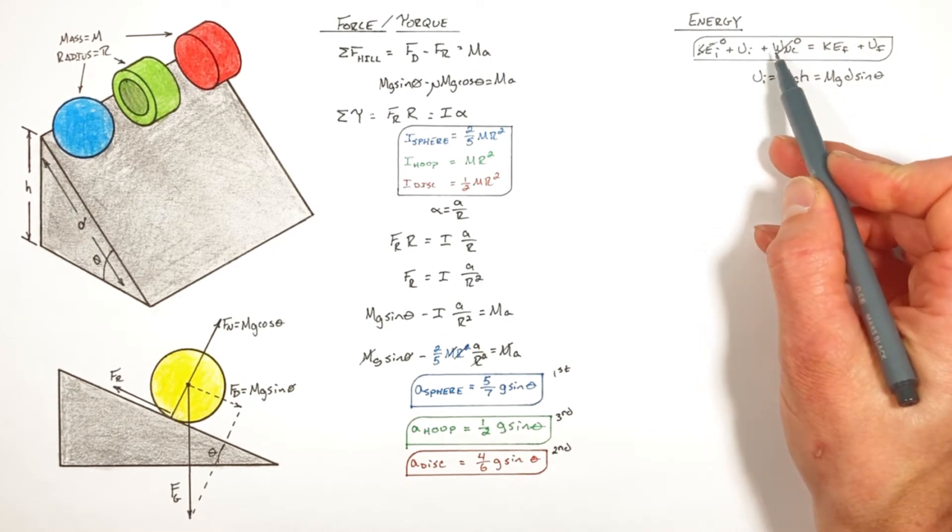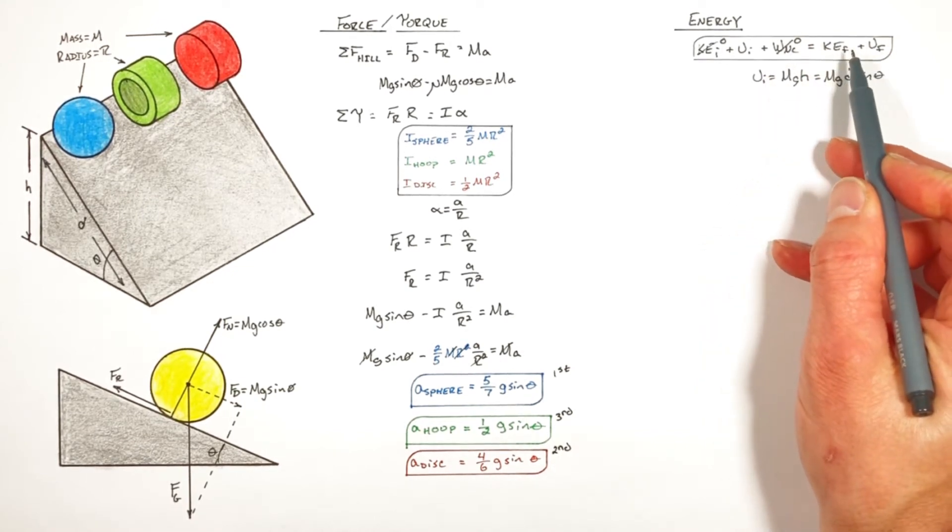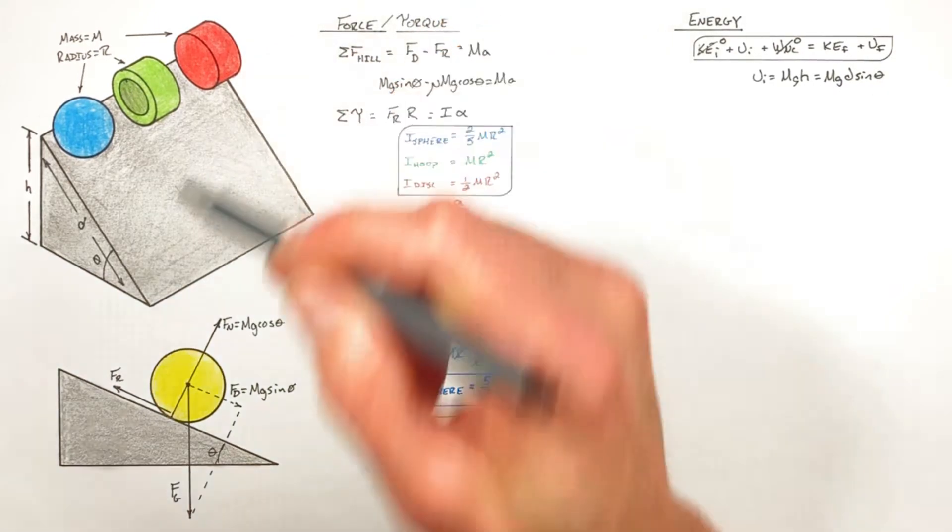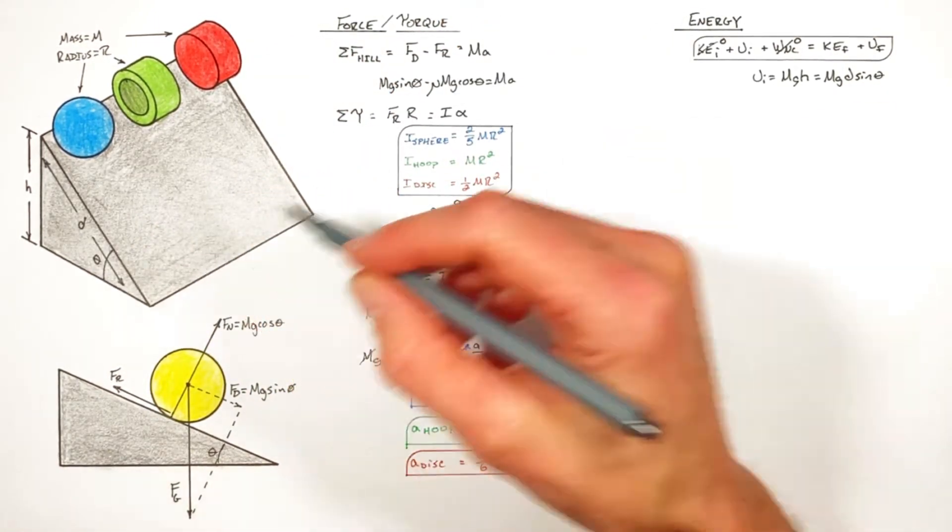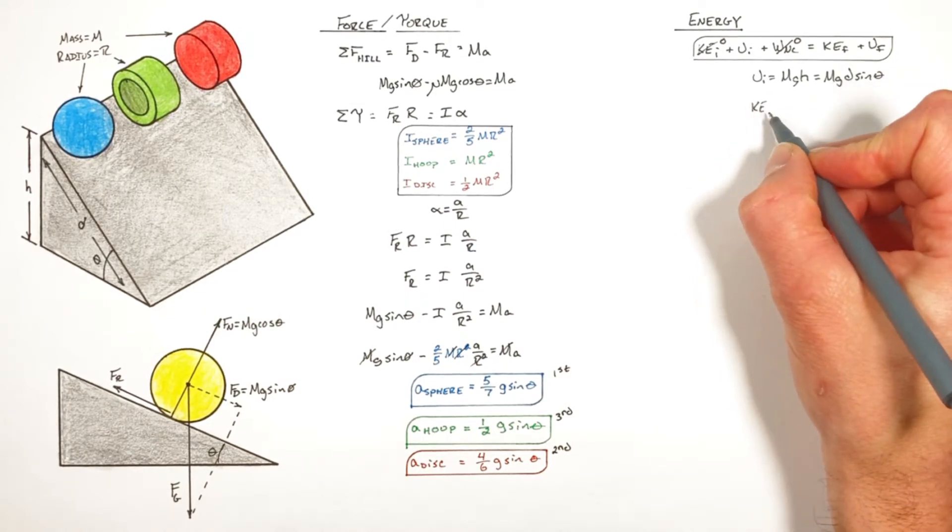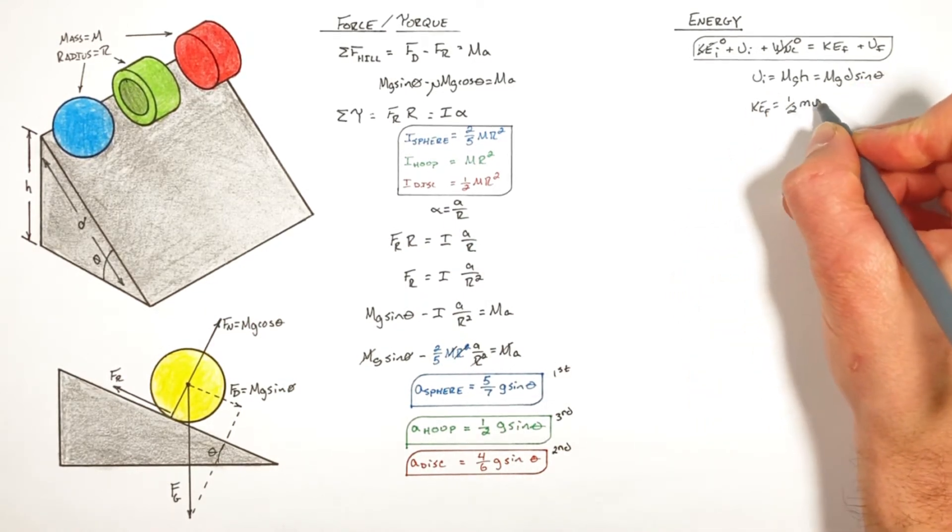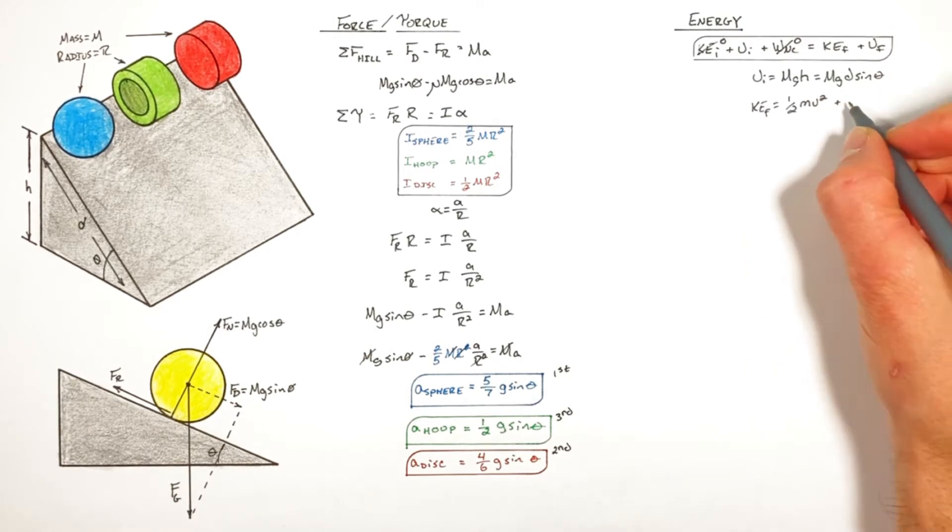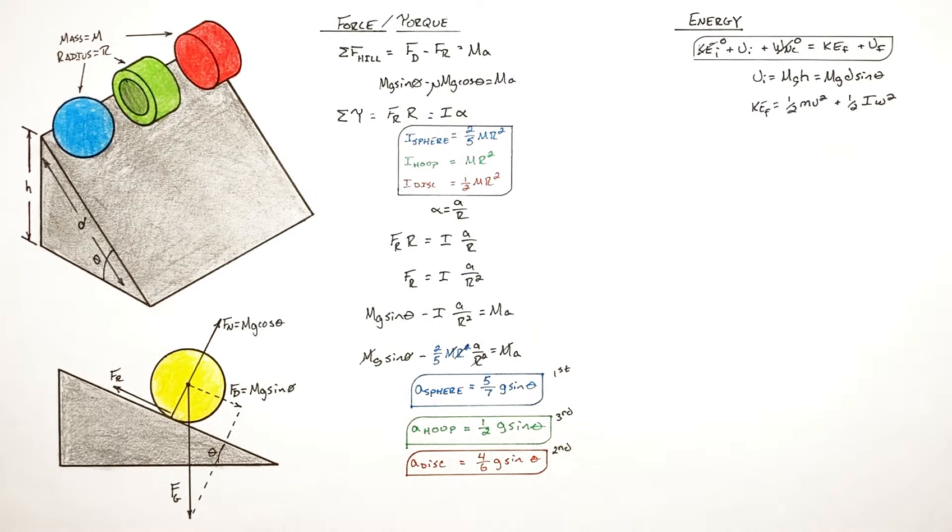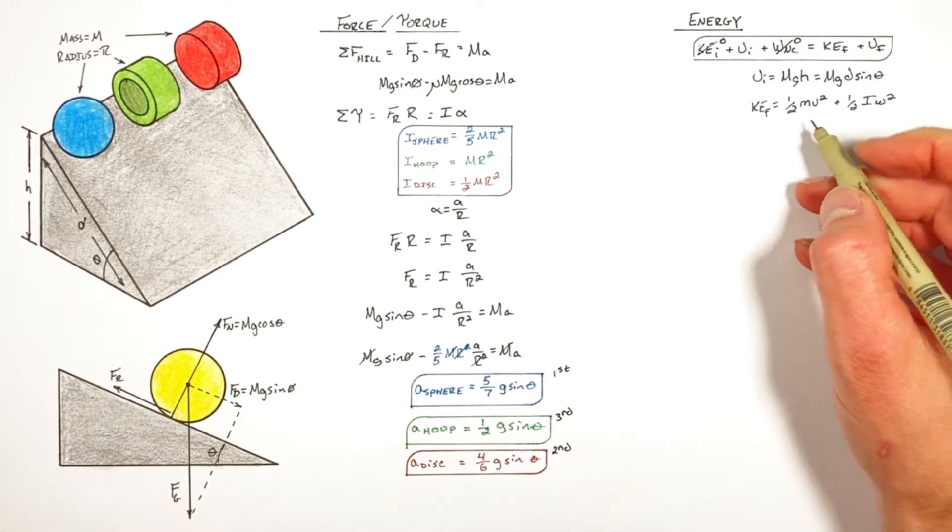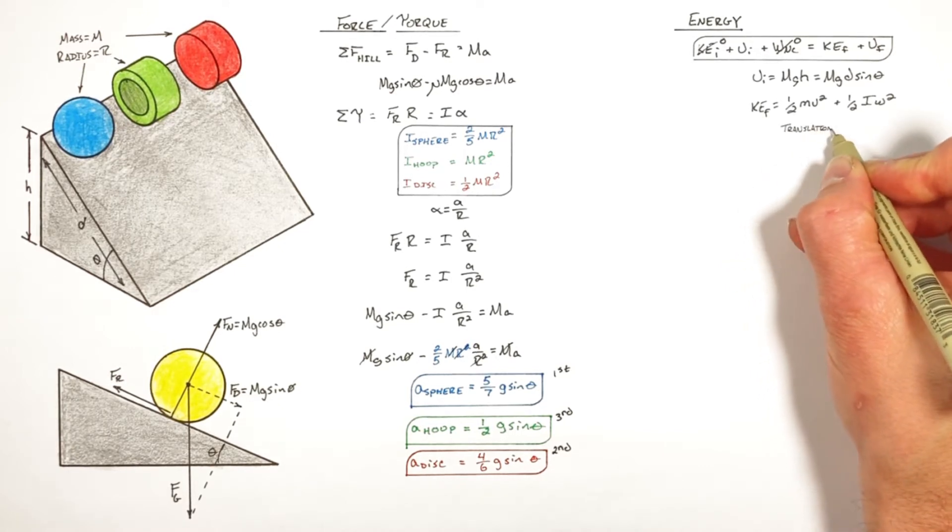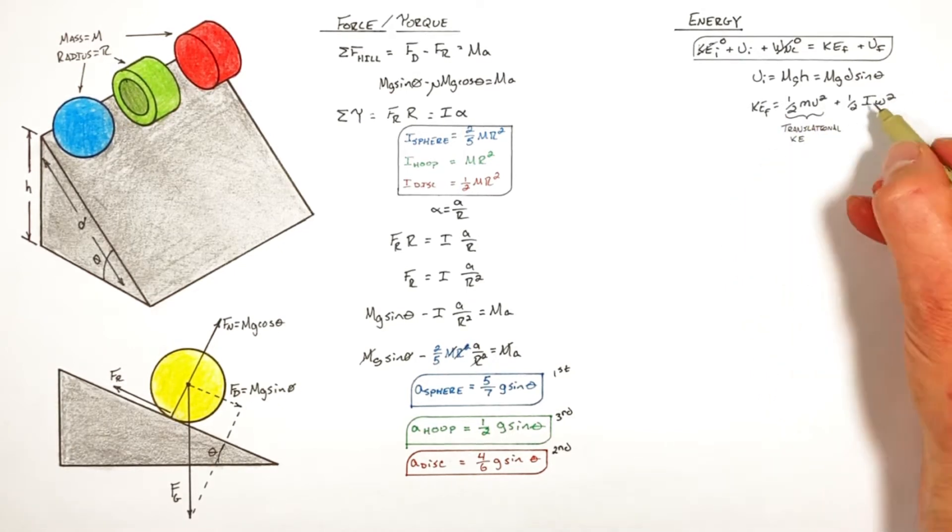And to understand why that is, we actually need to take a closer look at the final kinetic energy of these objects once they get to the bottom of the hill. Once these rolling objects get to the bottom of the hill, they're going to have some kinetic energy, and that kinetic energy is given by one half mv squared plus one half I omega squared, where this one half mv squared term is the linear or translational kinetic energy, and this term one half I omega squared is the rotational kinetic energy.